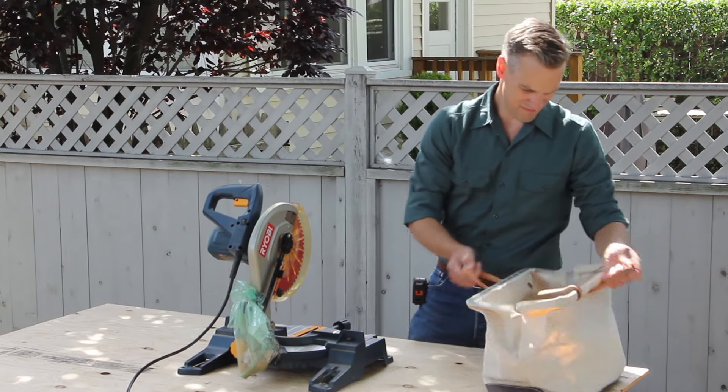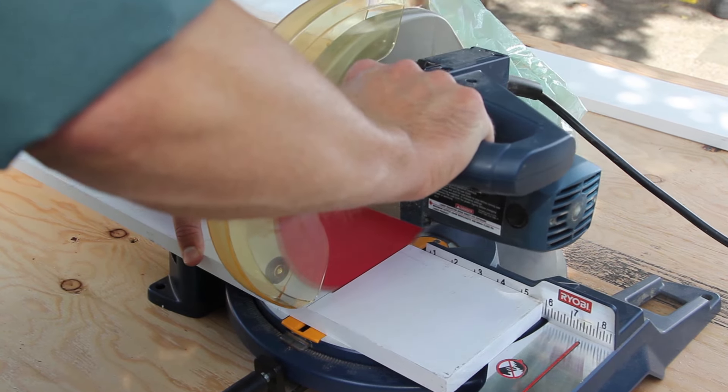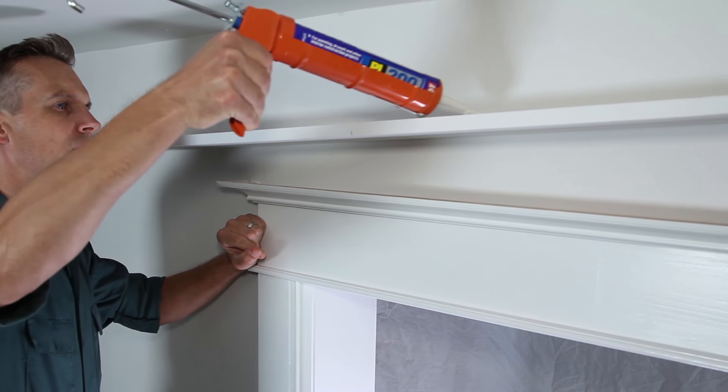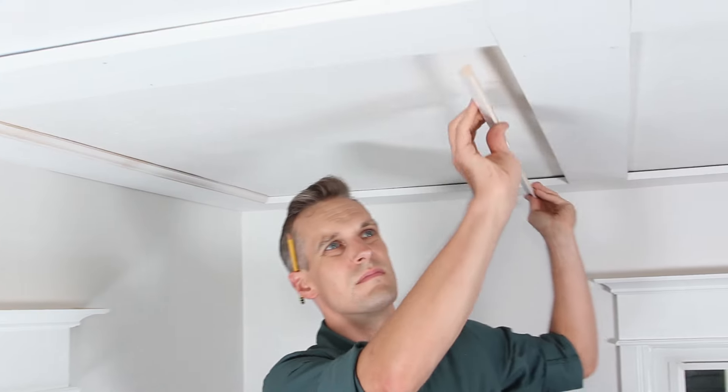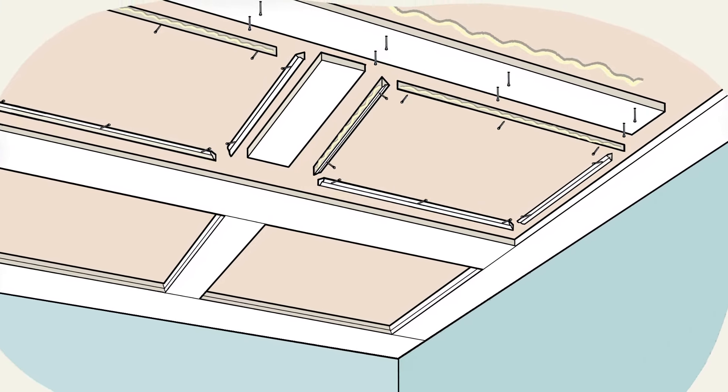Even the average DIYer can create this classic old house feature if you follow our low-profile design. We installed flat boards and molding instead of assembling box beams to make working overhead a lot easier. To see what you'll need, check out the tools and materials list on this web page.